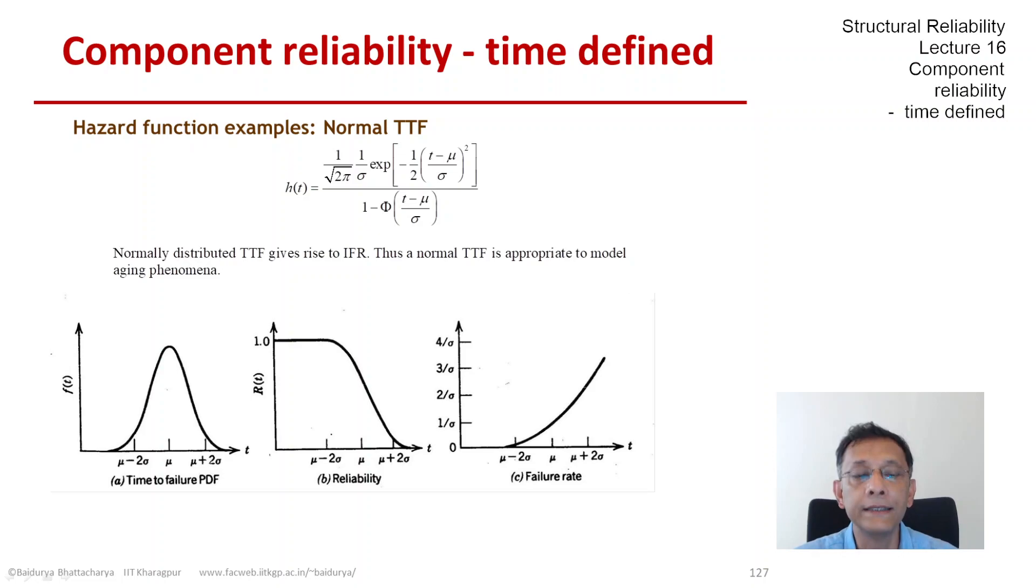And basically, we are looking at items that become more likely to fail as time goes on. So they are exhibiting aging type behavior. And we are going to look at this in detail, as I said later. So the normal distribution gives rise to an increasing failure rate.